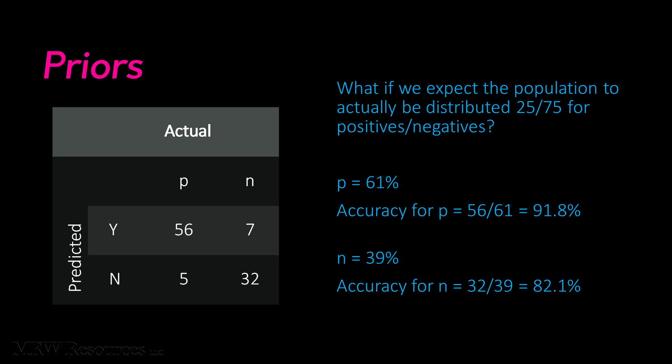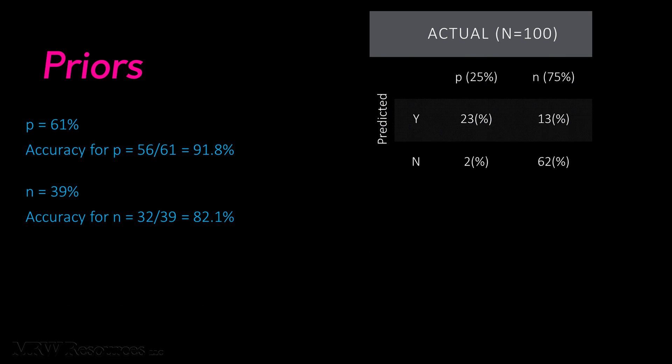Now we can apply those accuracy percentages to our expected population distribution and come up with a new probability matrix. We then substitute our new probability matrix into the expected value framework and we're able to calculate a whole new expected value for our model. In fact, we can test the robustness of our model by seeing how it performs with different priors.